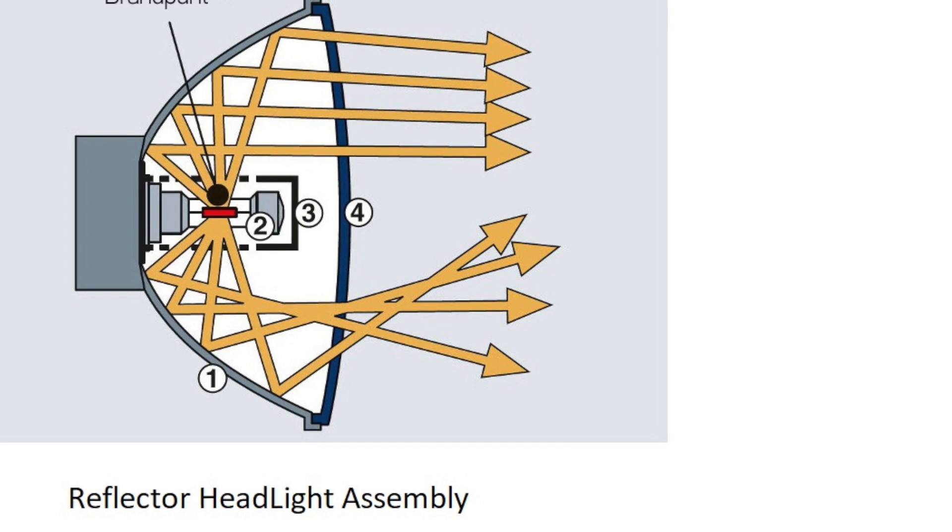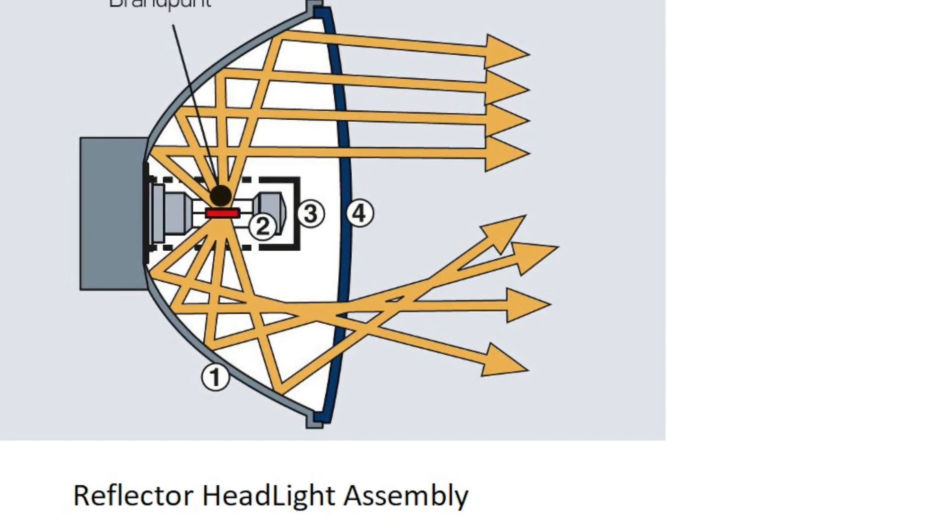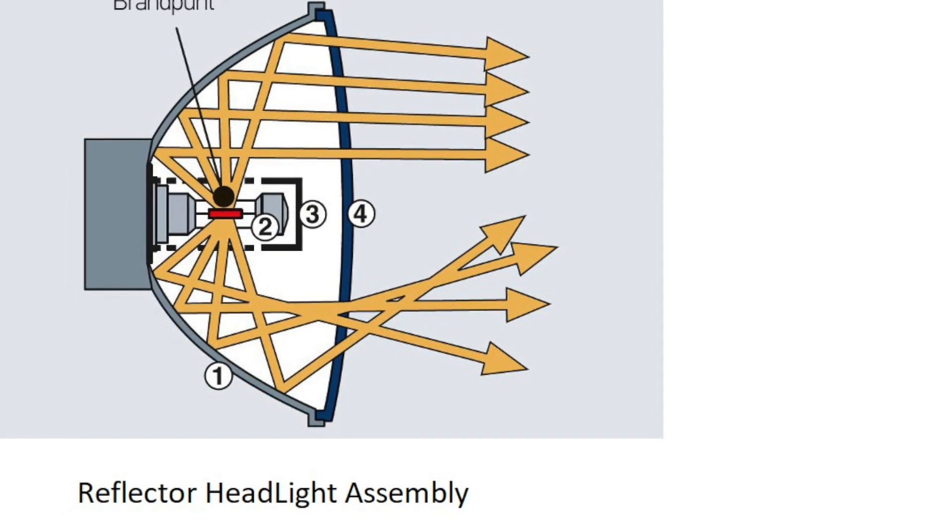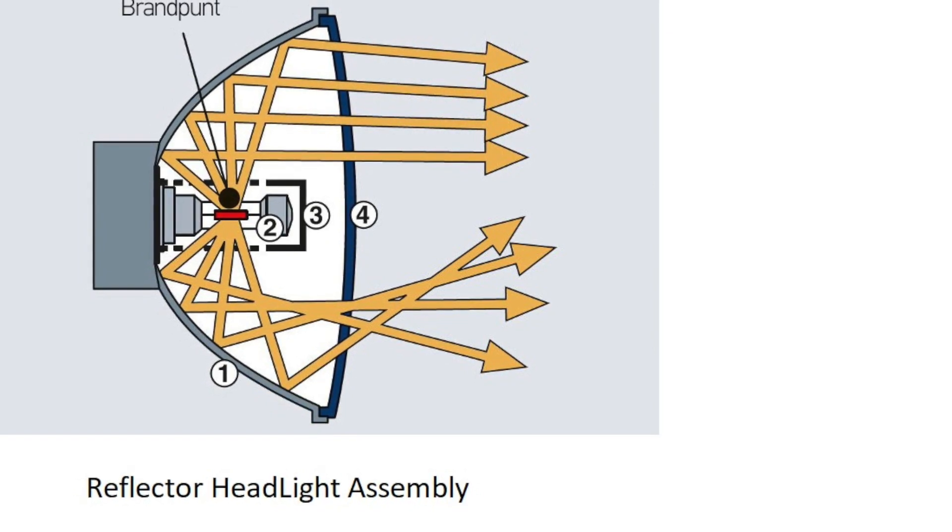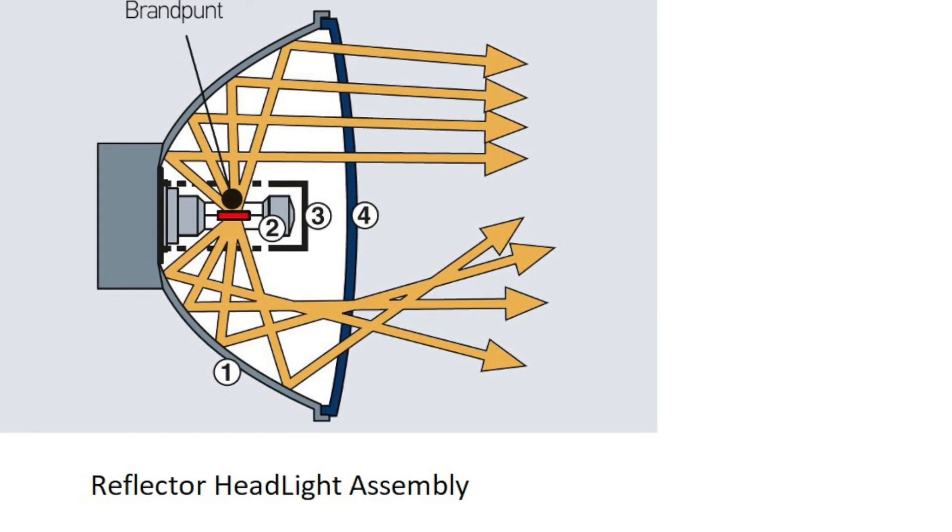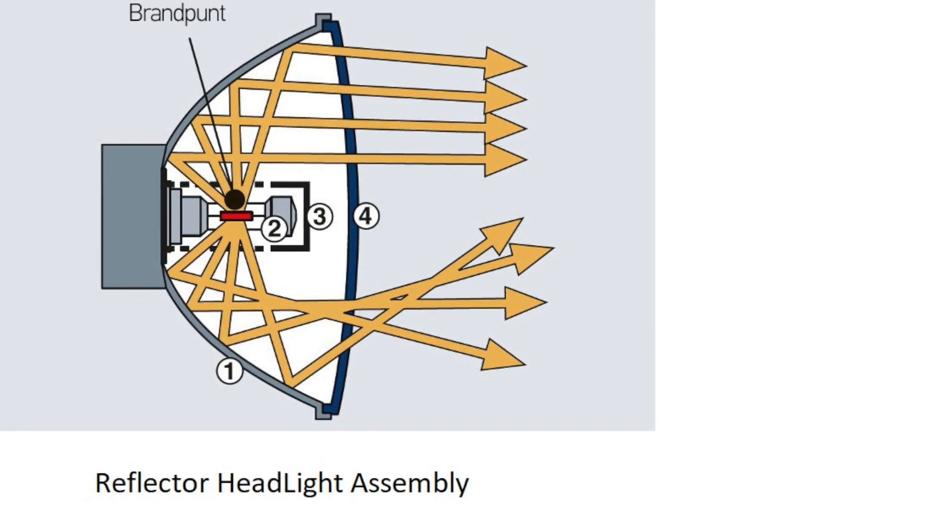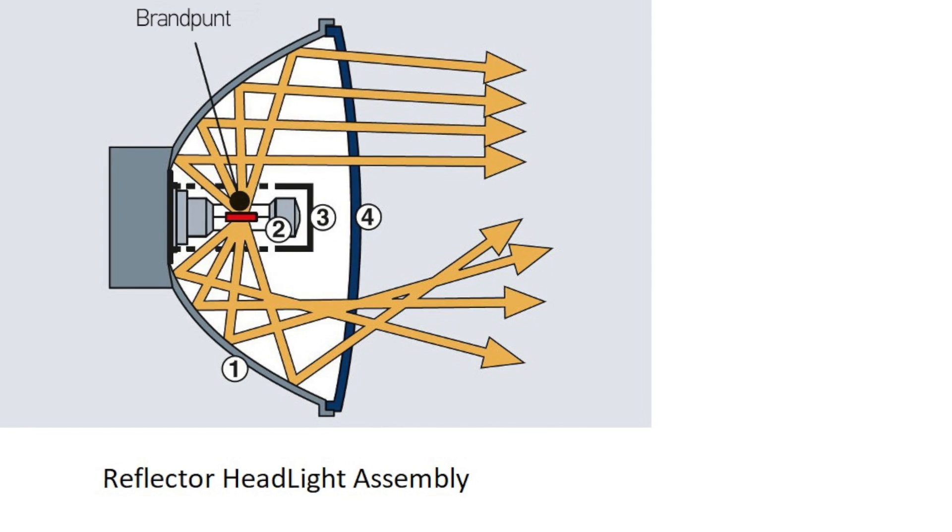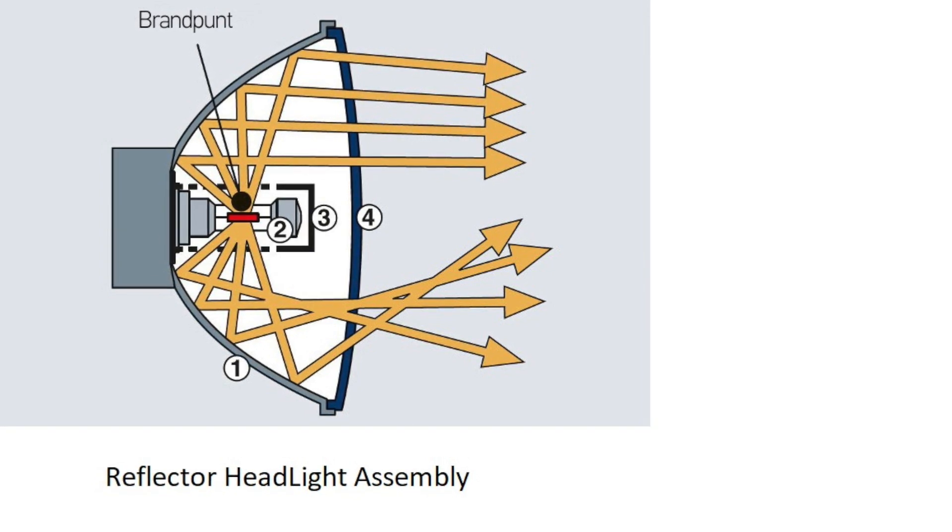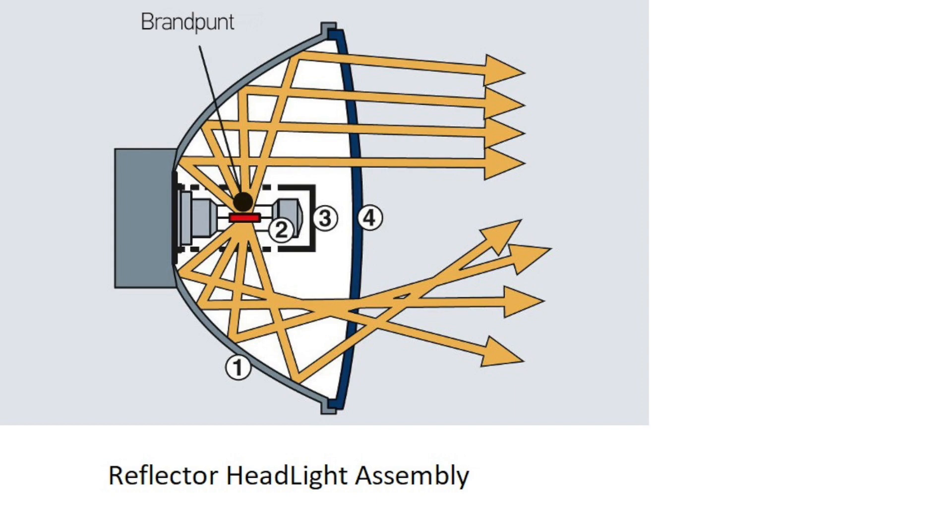As shown in the image here, you can see the light is emitted from the filament of the bulb at the center in red, and it is scattered towards the reflector where it is getting reflected multiple times and is getting thrown out of the headlight assembly. This is the reflector type headlight.